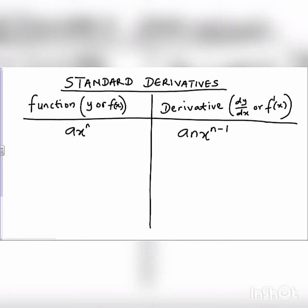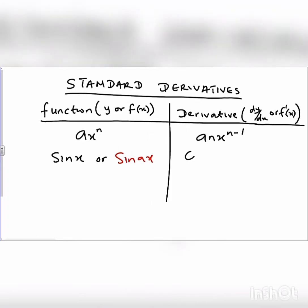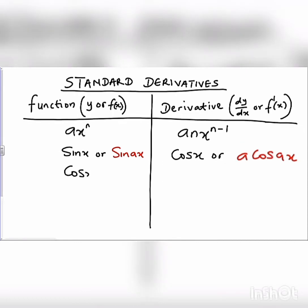If we have y is equal to sin x or sin(ex), the derivative will be cos x or e·cos(ex). When we have cos x or cos(ex), and we differentiate this, we are going to have minus sin x or minus e·sin(ex).